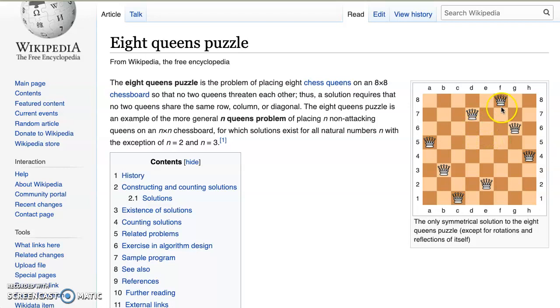Queens can attack across any row, they can attack in any column, and they can also attack on the diagonals. If we take a look at any one of these queens, this is one of the solutions to the eight queens problem.